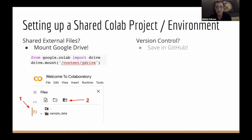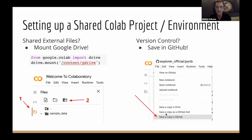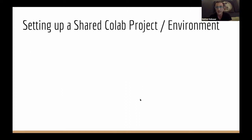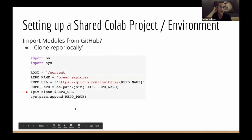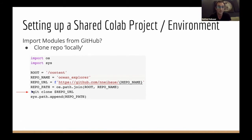Version control: CoLab has a very nice built-in GitHub integration. It's as simple as clicking File, 'Save a copy in GitHub.' It gives you a pop-up to authenticate your GitHub account and choose which repo and branch you want the notebook saved to. For importing your own modules: since this is a Google virtual machine, you just clone locally using the git command. You can write bash with an exclamation mark, run the clone line, add it to the path, and then import.